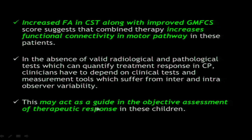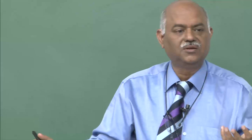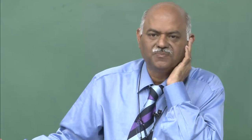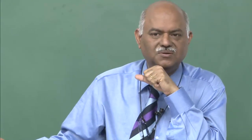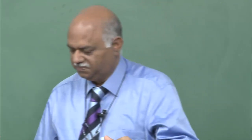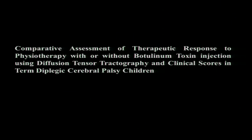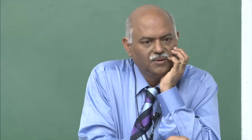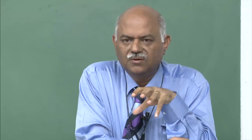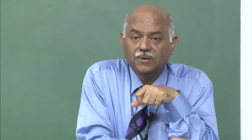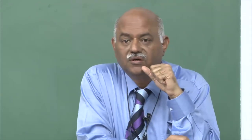We concluded this may act as a guide in the objective assessment of therapeutic response in children. Most people say the child improved — that is subjective. To objectify the improvement, you have to show actual changes in the brain, which we showed for the first time. This raised two questions: is improvement in plasticity seen? Is botox required? Can we do physiotherapy alone, or must we combine it with botox, given the large chunk of the population that cannot afford it?